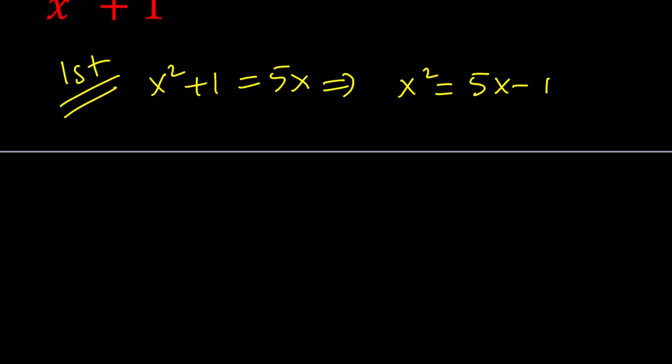And then the next step would be squaring both sides. Let's square both sides. And the reason behind that is to get x to the 4th power. Now this gives us 25x squared minus 10x plus 1. Now notice that x squared can always be replaced with 5x minus 1. So let's rewrite this expression.